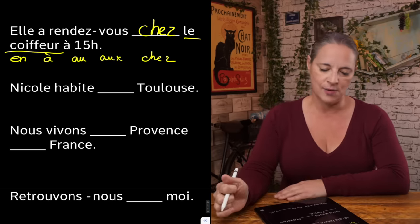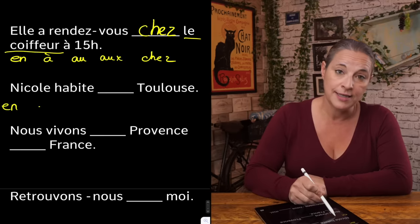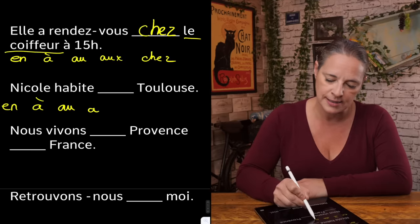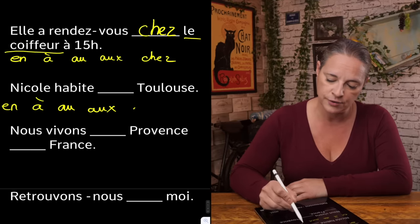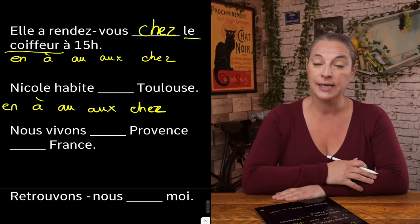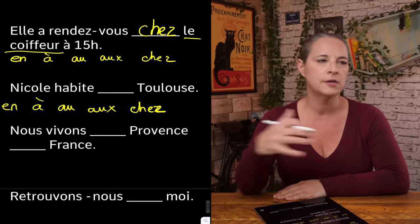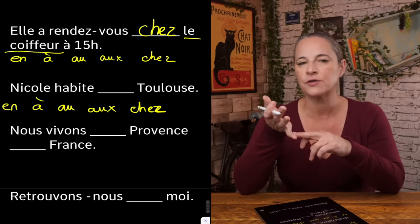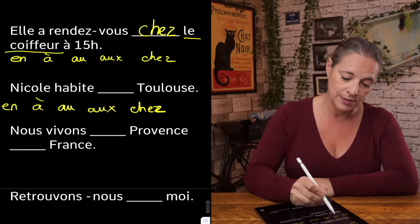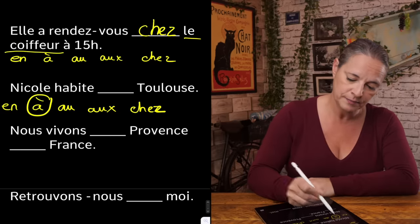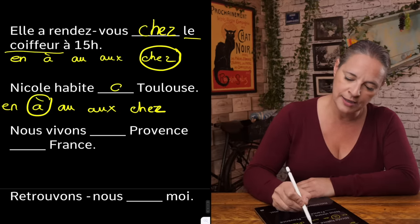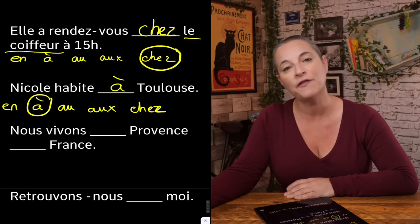Let's have a look at the next one. Is it 'en' for a country? Is it 'à' for a town? Is it 'au' for a masculine country? Is it 'aux' for plural countries? Is it 'chez' for someone's house? 'Nicole habite ___ Toulouse.' Is Toulouse a country? No, it's a town in France. So it is going to be 'à': 'Nicole habite à Toulouse, en France.'